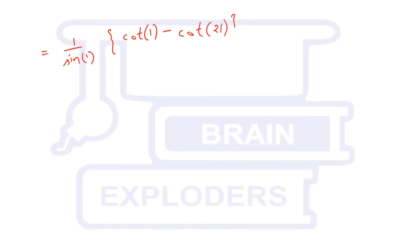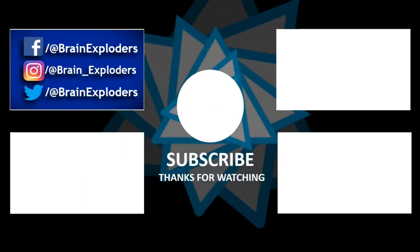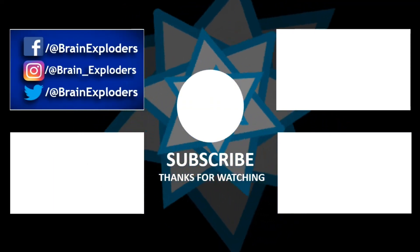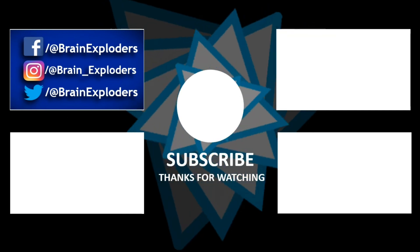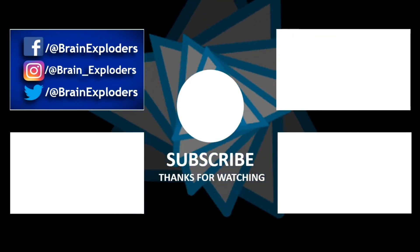The final value is (1/sin 1) · (cot 1 - cot 21), which is approximately 1.541. That was our solution — don't forget to like and share the video, and subscribe to our channel Brain Exploders. Thanks for watching!